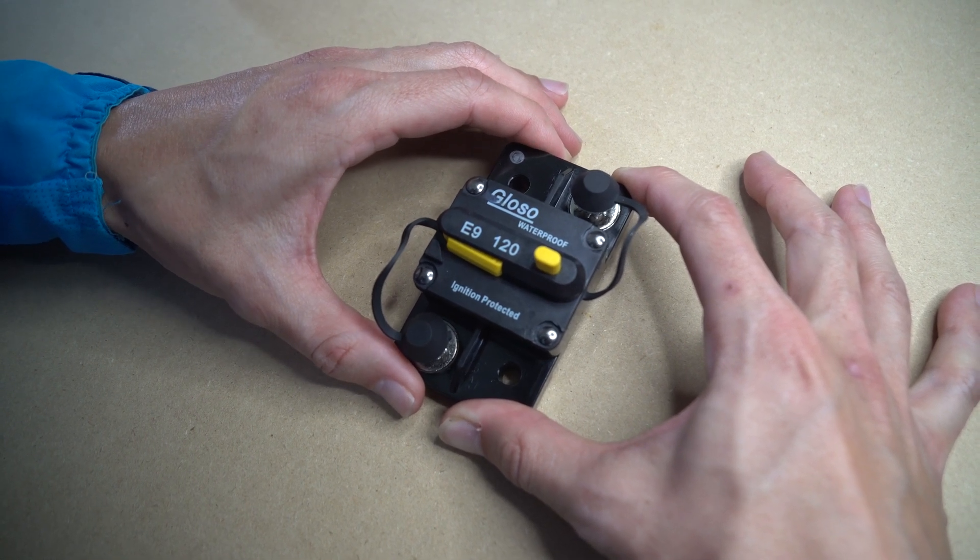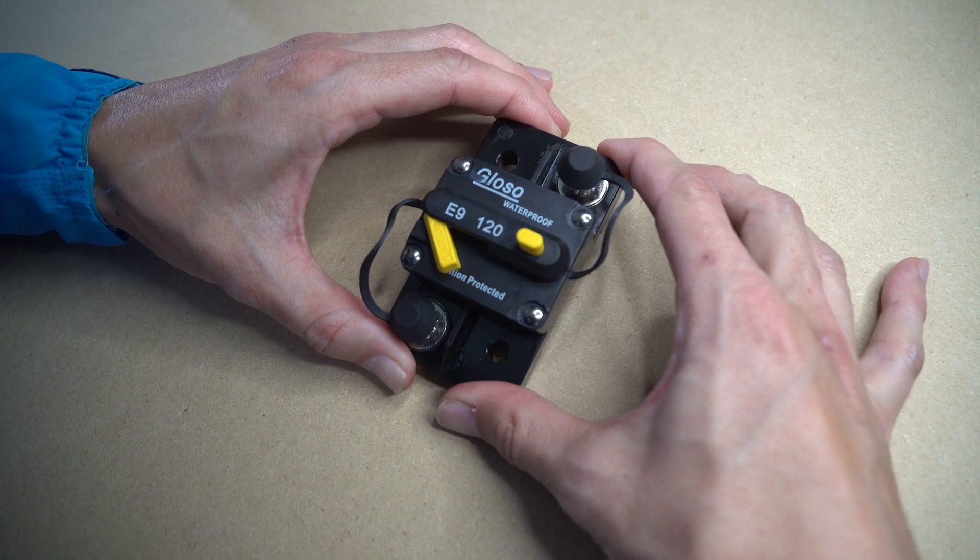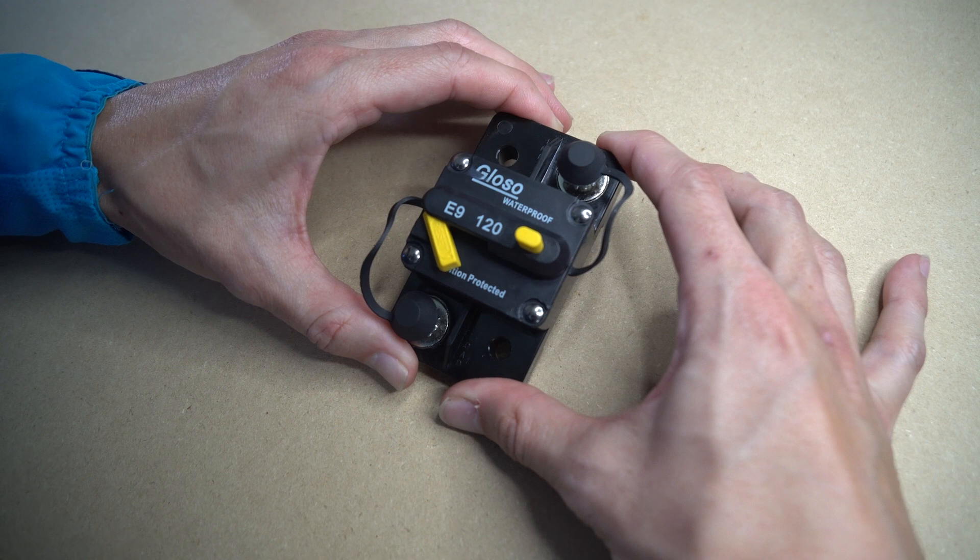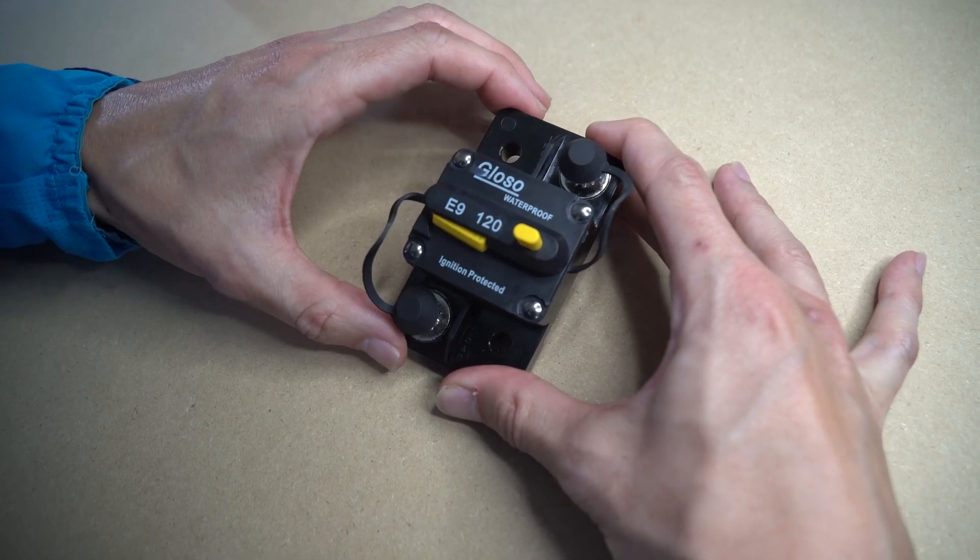There is also a button to manually trip the circuit in case you want to do any maintenance to your electrical system. If the breaker is flipped, you can easily re-establish the circuit by pushing the switch back into the slot.